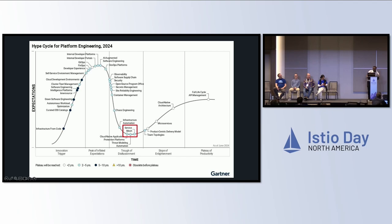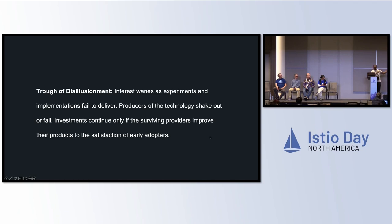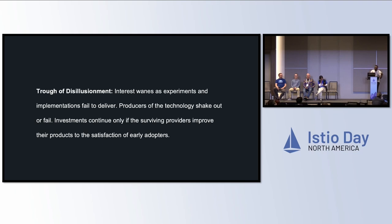The trough of disillusionment — straight from Gartner's methodology — means interest in the technology is waning, as experiments and implementations fail to deliver on inflated expectations. People often look for one-size-fits-all solutions, which don't usually exist. Technologies can fall into this trough where people aren't as interested. Investments typically only happen if surviving providers improve their product to the satisfaction of early adopters. That's straight from Gartner.